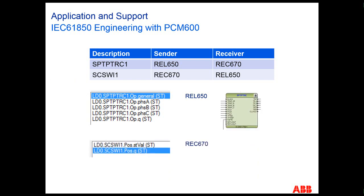In the case of the circuit breaker position, this is going to come from the SCSWI1 POS STVAL, and we also have to include the quality. This will be a second GOOSE message. Each relay is going to publish a GOOSE message — in the case of the REL650, it is going to contain the trip signal, and in the case of the REC670, the circuit breaker position.